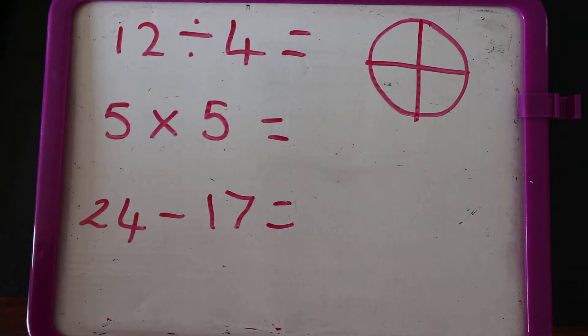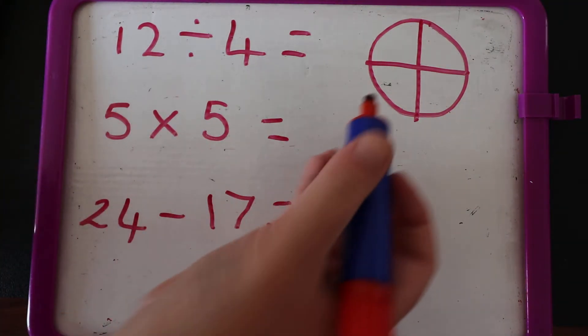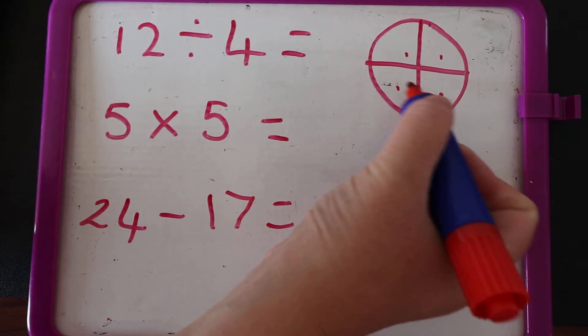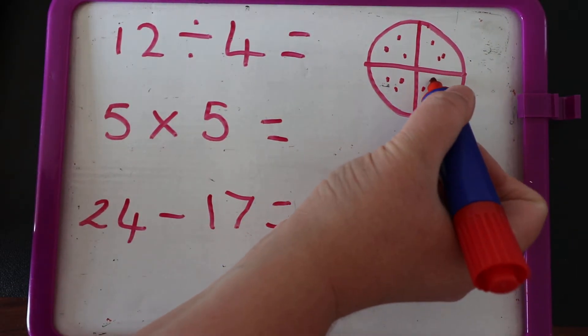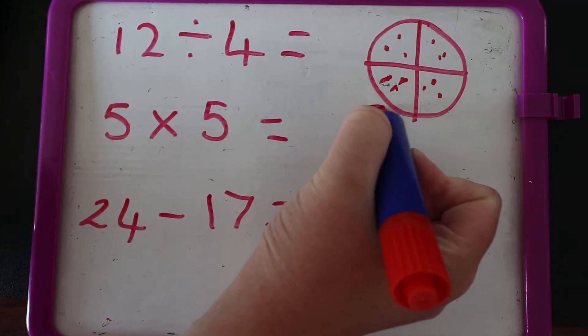Into, I've got four parts my pizza, and I'm going to share my 12. Ready? One, two, three, four, five, six, seven, eight, nine, ten, eleven, twelve. How many have I got in each group? I've got one, two, three.